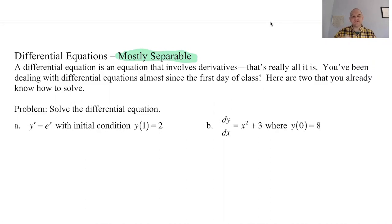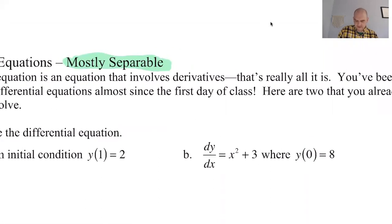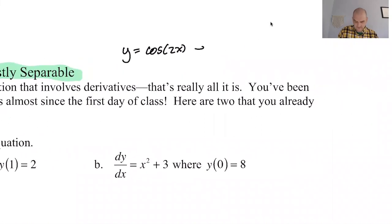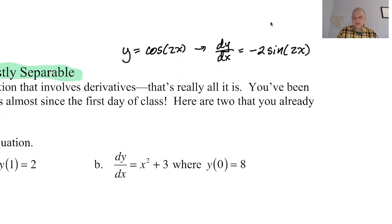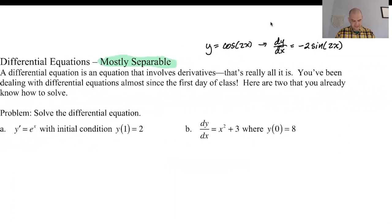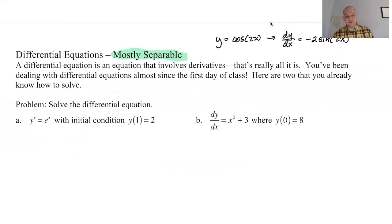You've been looking at differential equations as long as you've been taking derivatives. If you start off with y equals cosine of 2x, then you take the derivative and you get dy/dx — the rate of change of y with respect to x — is negative 2 sine of 2x. This is a differential equation because it has a derivative in it; that's all it really is.